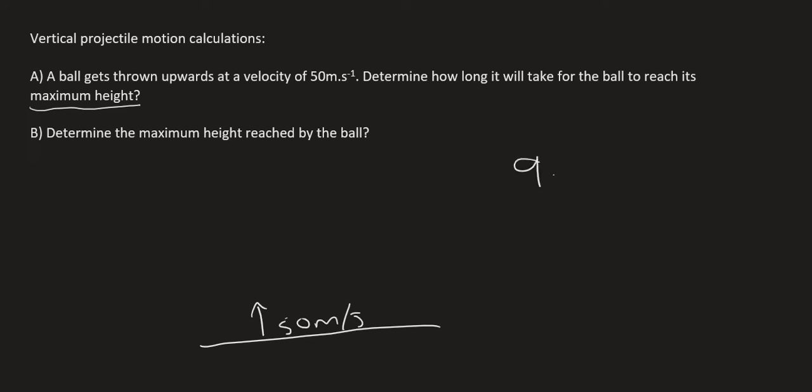So it's going to slow down by 9.8 meters per second every second, and so that's where the squared comes from. So after 1 second, it's going to be traveling 40.2. After 2 seconds, I'd have to minus another 9.8, you'd get to 30.4. That's 2 seconds already.